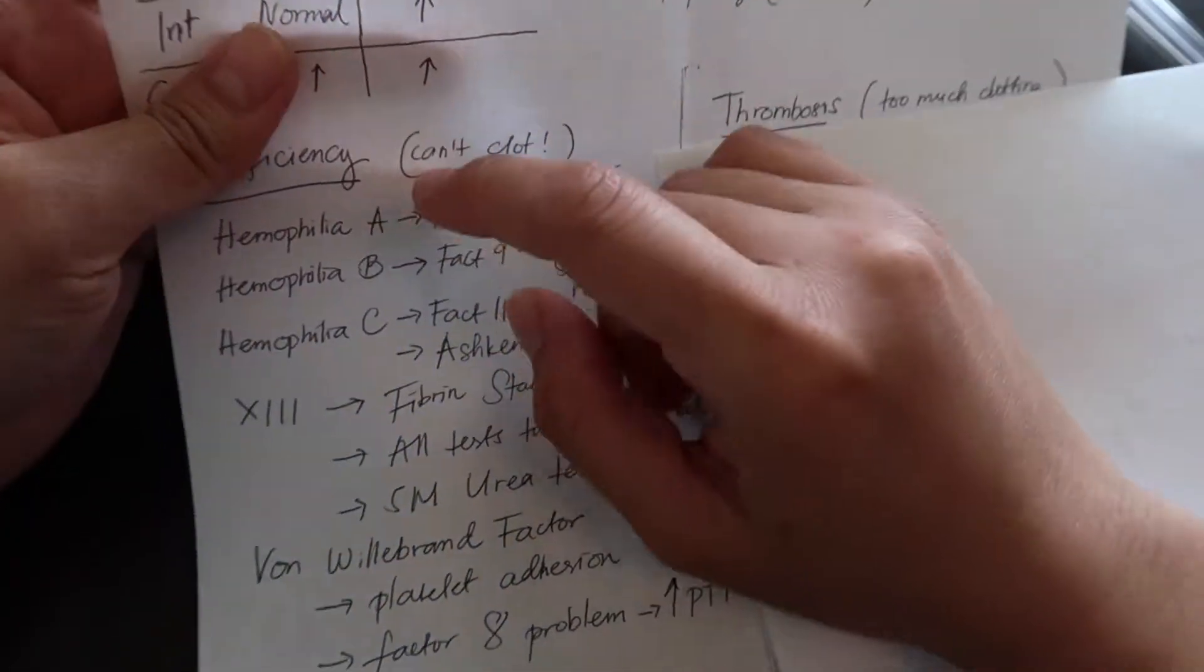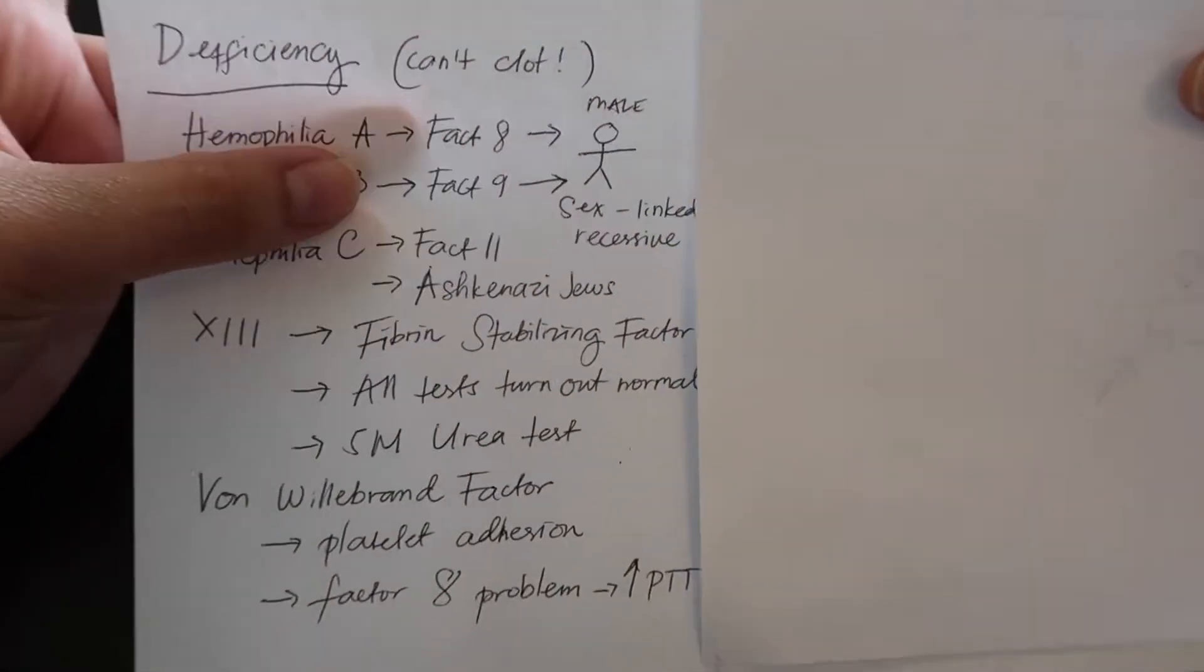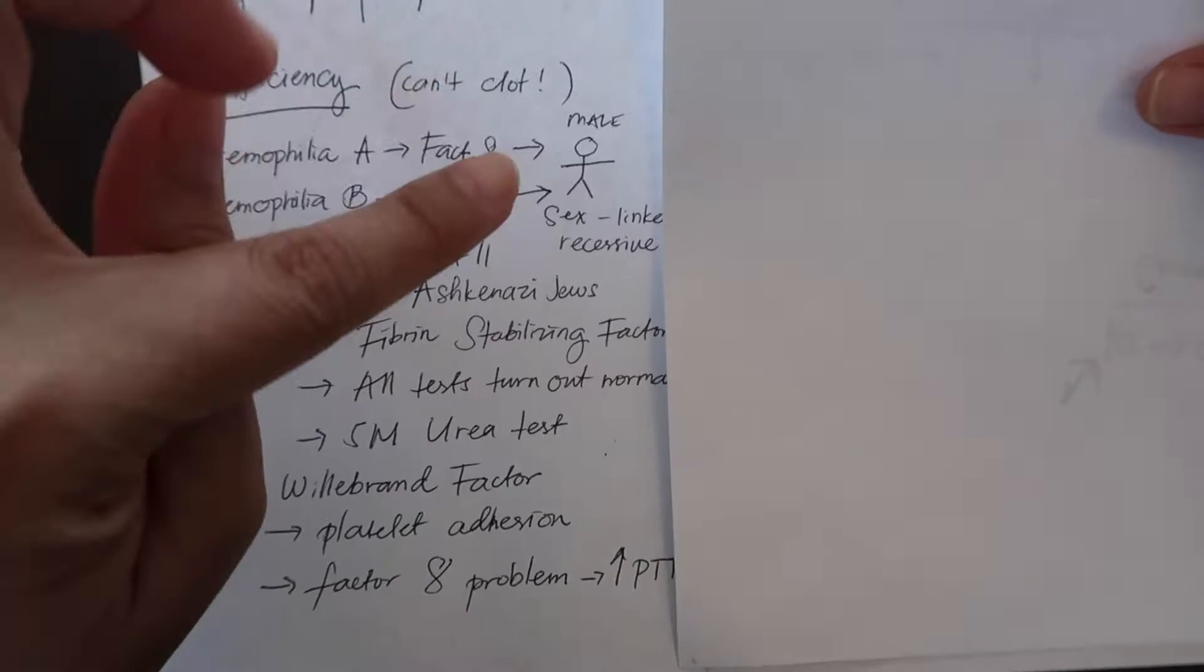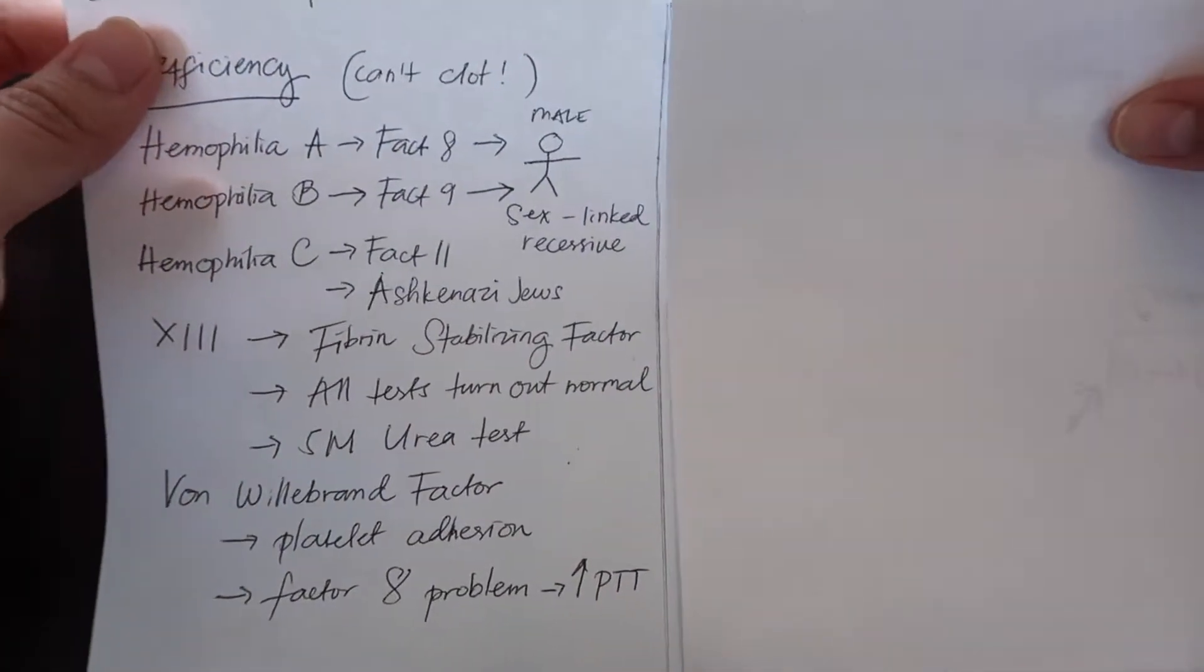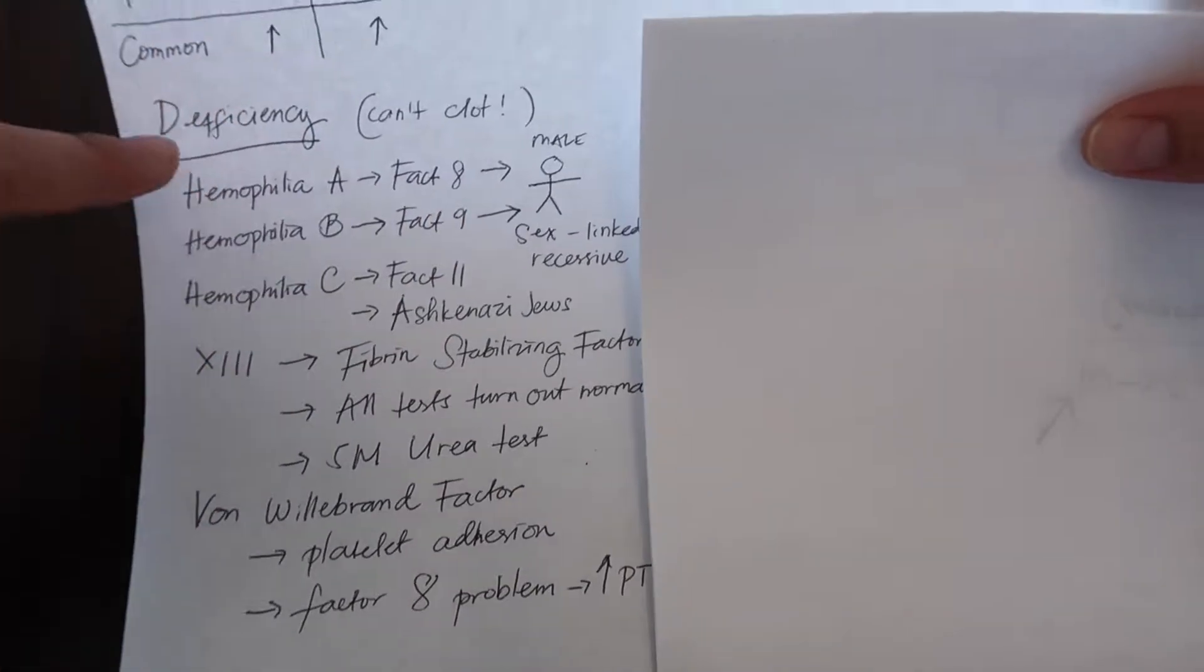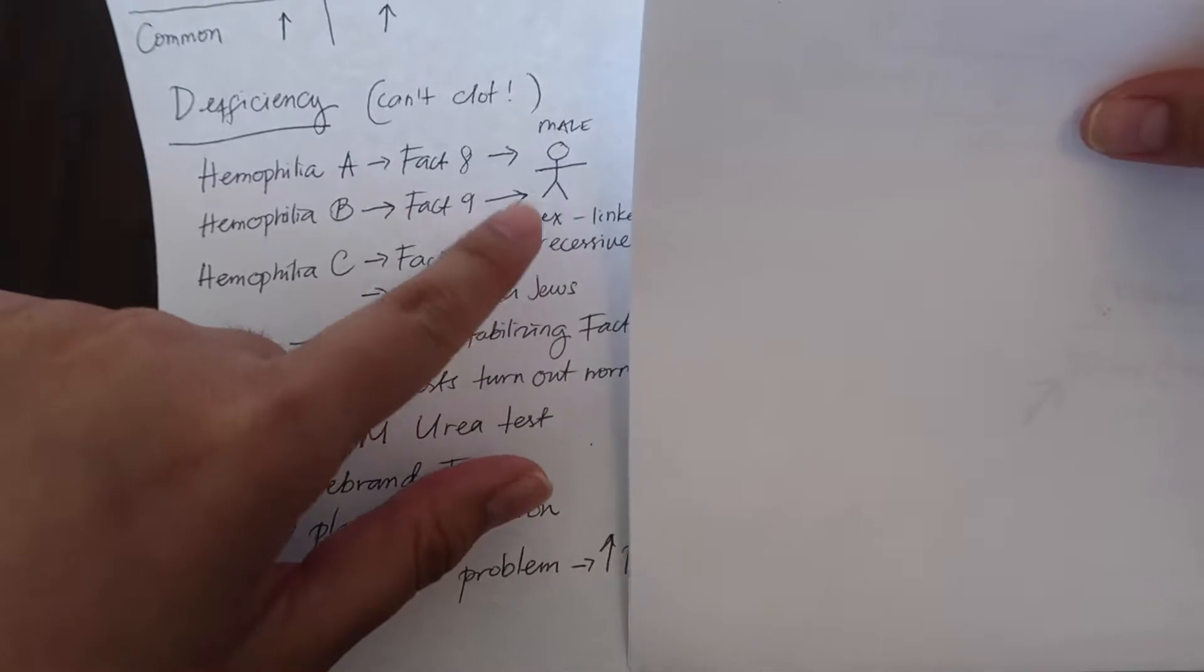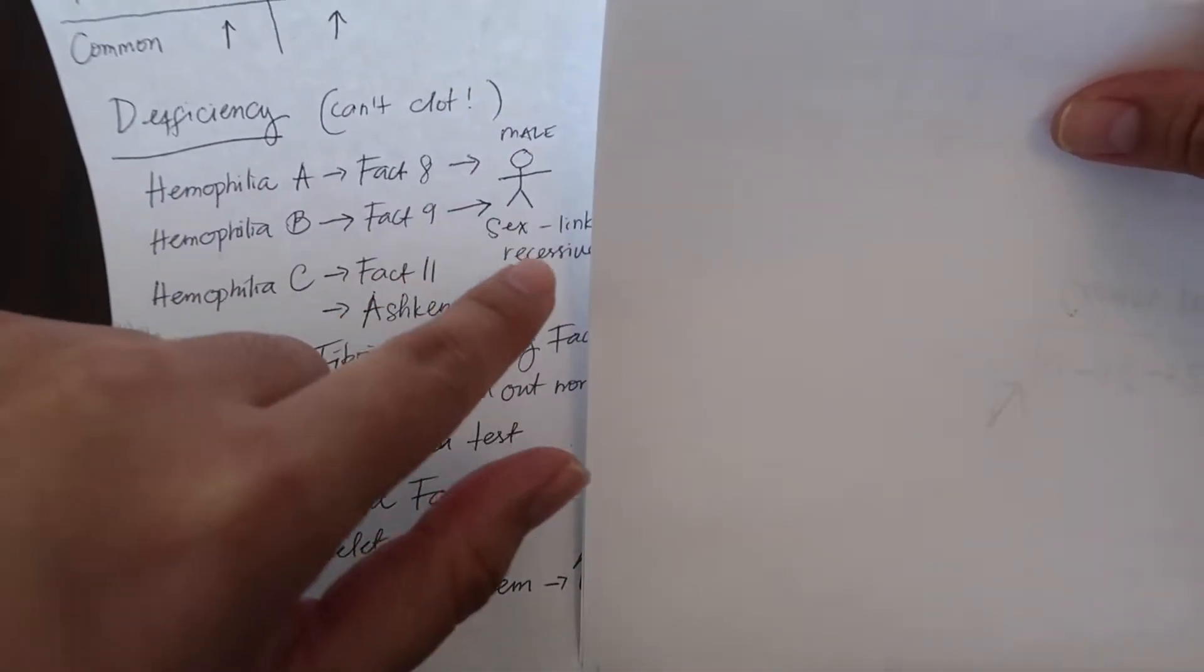The most common one is hemophilia A, factor 8 deficiency. It happens in males because it's sex-linked recessive. Remember that because hemophilia B, factor 9 deficiency, is also sex-linked recessive. This disease shows up in males almost always, most of the time.